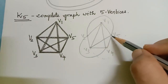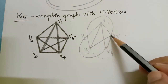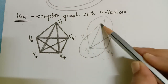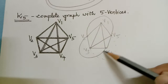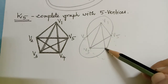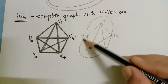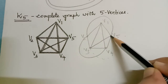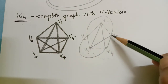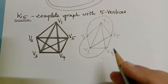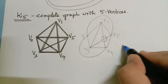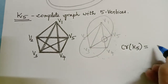Now we can verify edges between all vertices: V1 to V2, V3, V4, V5; V2 to V1, V3, V4, V5; V3 to V1, V2, V4 and V5; V4 to V1, V2, V3 and V5; and V5 to V1, V2, V3, V4. So we can draw K5 with one crossing. Therefore the crossing number of K5 is equal to 1.